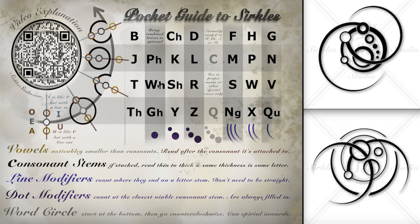This all makes the most sense in practice, so let's go ahead and hop to our designs. This script is read starting at the bottom of the words and then going counterclockwise, like a time traveler going back in time. And that's why this gray word circle has the arrow here, starting at the bottom going counterclockwise.